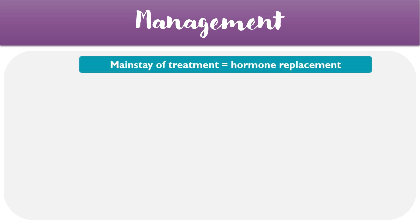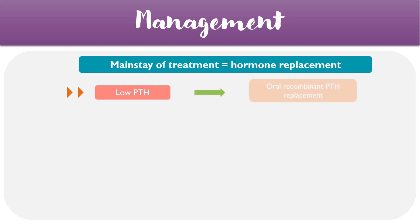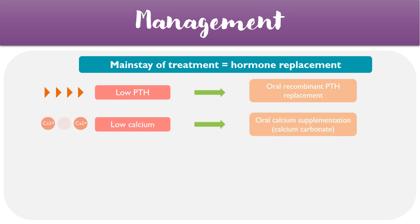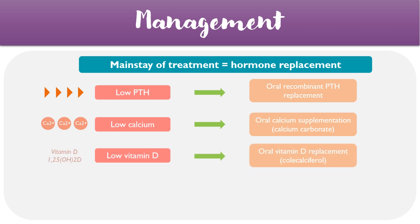For the management of hypoparathyroidism, the mainstay of treatment is hormone replacement, so the low levels of PTH can be replaced directly with oral recombinant PTH tablets. At the same time, it's worth correcting other deficits — for example, low calcium levels can be corrected by taking regular calcium tablets, which is often calcium carbonate. Low vitamin D levels can also be corrected by taking cholecalciferol, which allows more of the active form of vitamin D to act within the body.